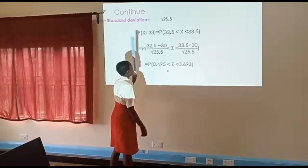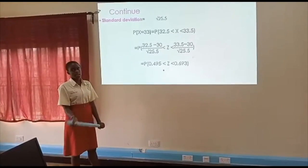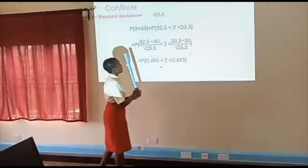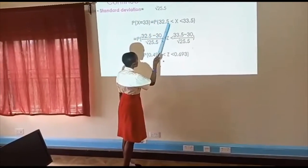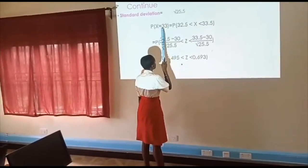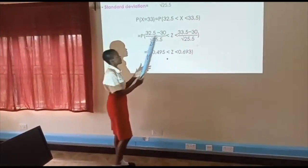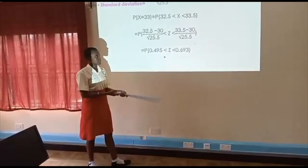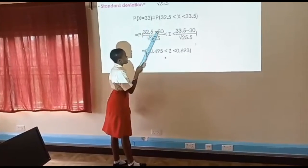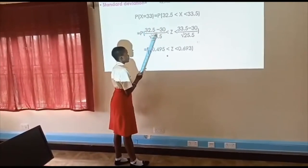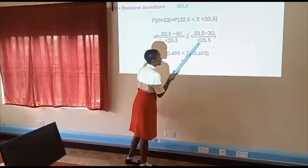They want us to find exactly 33. This is discrete. So we have to change it to continuous by subtracting and adding 0.5. That will form an interval. We subtract 0.5 from 33 to get 32.5 less than X less than 33.5. Now we have formed an interval. But we have to standardize it so we can change from X to Z. We standardize by subtracting the mean and dividing by standard deviation. We do it for both values.